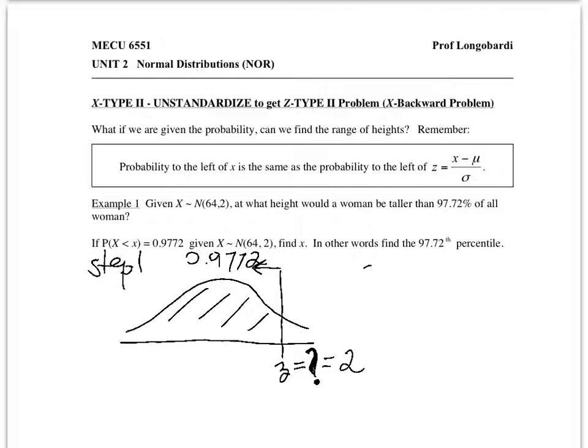The second step involves turning that into an actual value where I take Z standard deviations from the mean to find how tall a woman is. So Z is 2, standard deviations is 2 in this problem, remember from here, plus the mean of 64 also from there. And the answer is 68 inches.